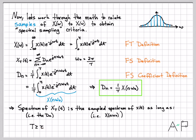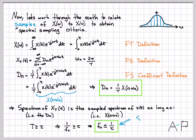Let's think about this condition in terms of frequency sampling. Since T controls the periodic repetition in time, and T and the fundamental frequency are related by T = 1/f_0, the condition T ≥ tau becomes 1/f_0 ≥ tau. Flipping both sides of the inequality gives f_0 ≤ 1/tau. This is the spectral sampling criteria: if we want to describe a continuous time signal by taking samples of its spectrum, the spacing of those frequency samples must be less than or equal to 1/tau, where tau is the time duration of the signal.